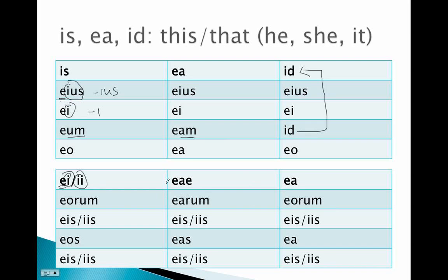Eorum, earum, eorum, our regular genitive plural endings. Eis or iis, eis, eis.